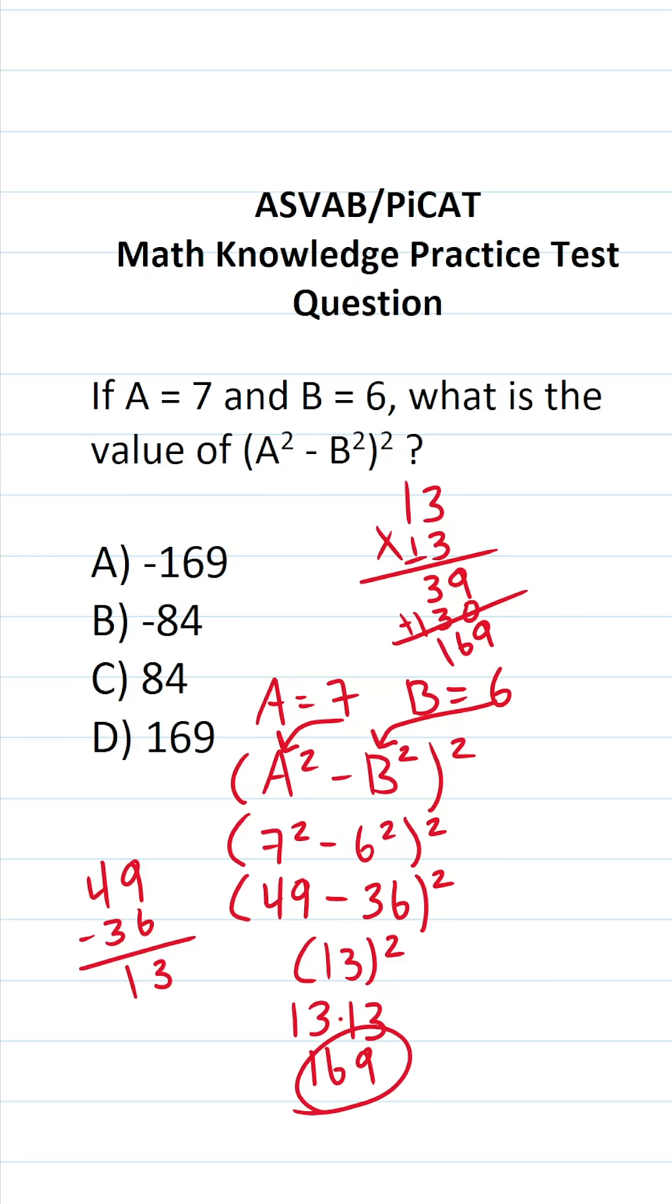I know some of you have that memorized already. But the answer to this one is, what is the value of A squared minus B squared squared when A is 7 and B is 6? Clearly, it's D-169.